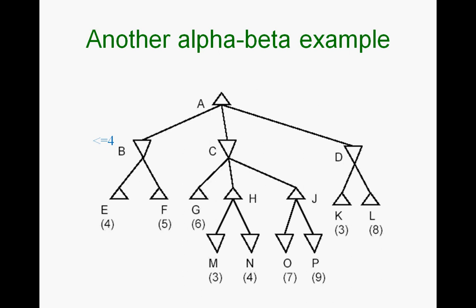Depth-first search comes back and goes to F. Finding F, you take the minimum of 4 and 5 for B, so B's real value becomes 4. As soon as B has a real value, A now has a real bound—a greater than or equal to bound.